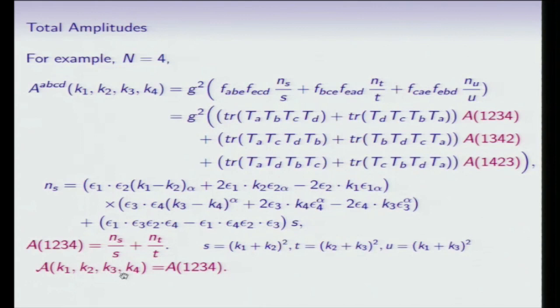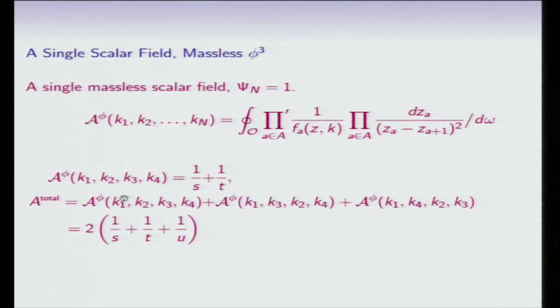If we just want to consider a single scalar field, which will be useful in understanding how we went about our proof, even for the Yang-Mills case, we can set psi n equal to 1, and then the four-point function would look like, with no dressing on it, and the total amplitude is given by a sum over the permutations.